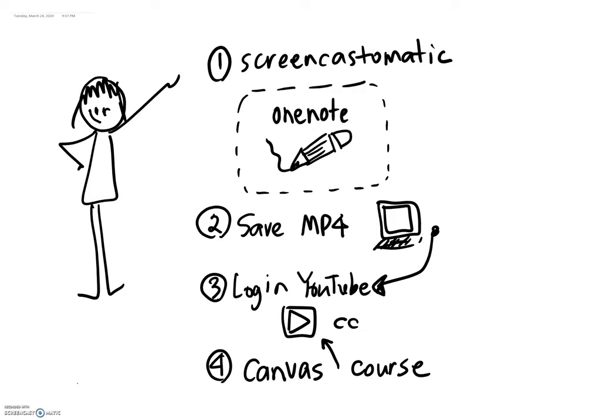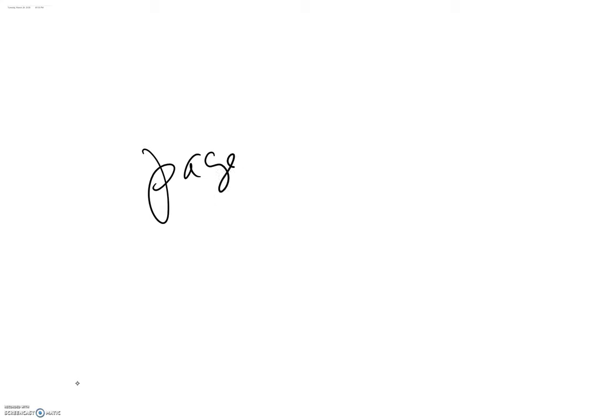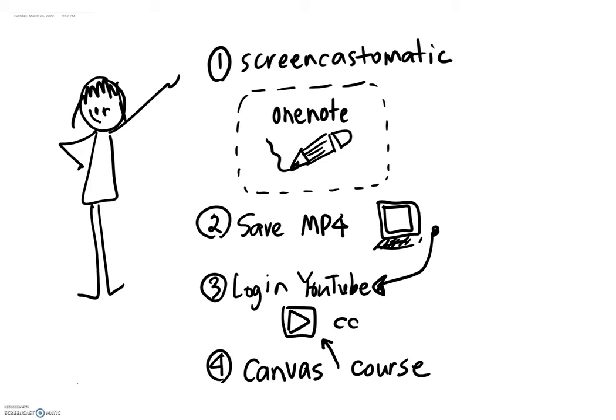By the way, I could move to another page and do page two — that's how OneNote lets me do other pages, and then go back to page one. It would let me have more recording space if I had needed it. Thanks for watching.